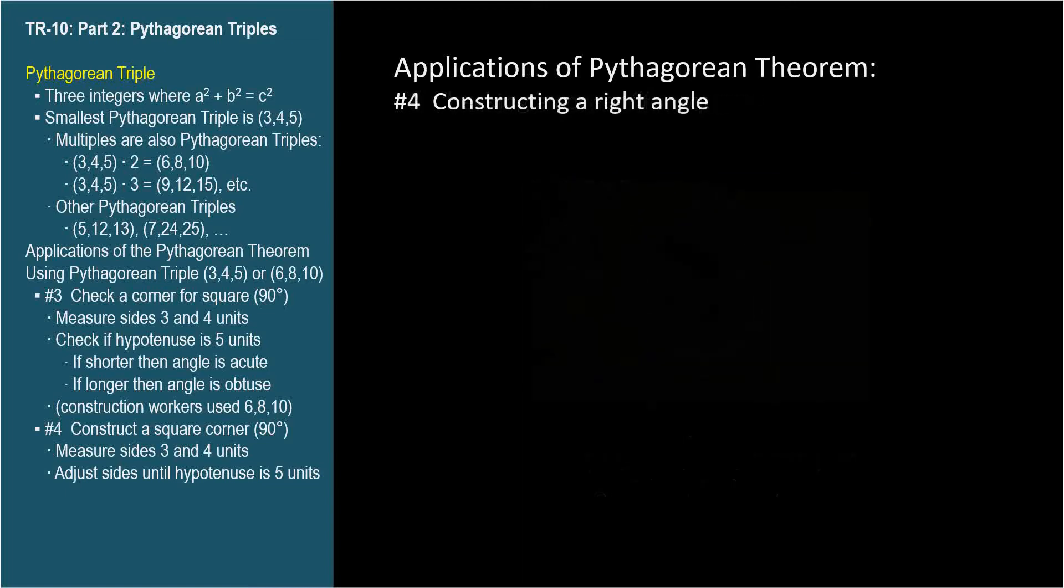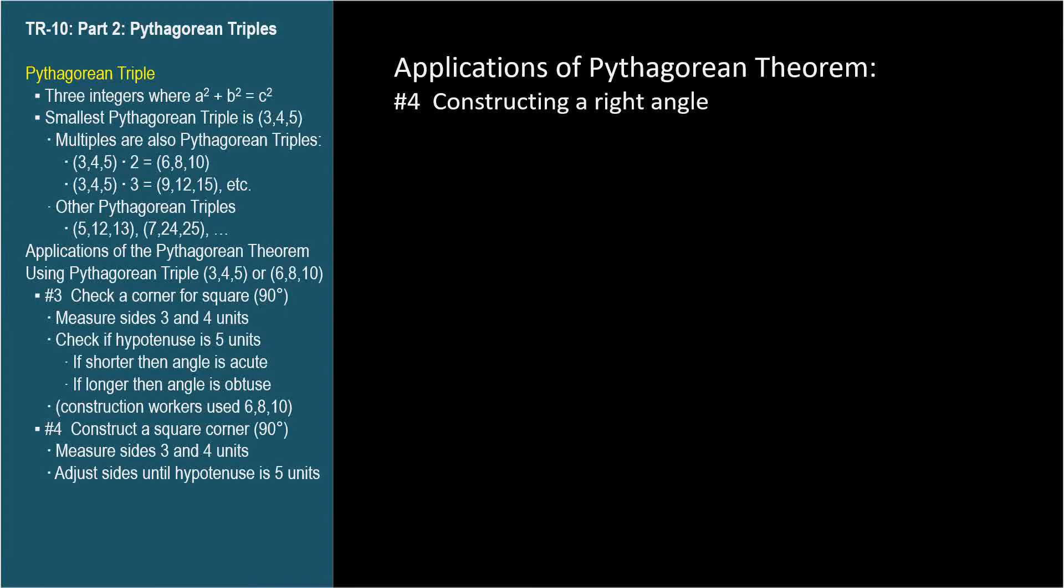The fourth application of the Pythagorean theorem is very similar to number three. We can use a Pythagorean triple to construct a right angle. In this video clip, a gardener wants to create a square corner in her garden.